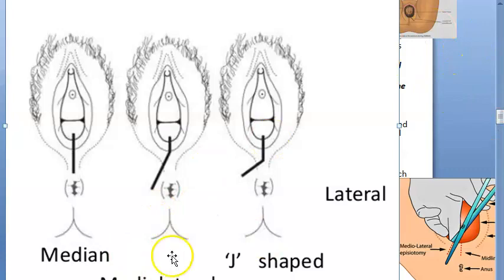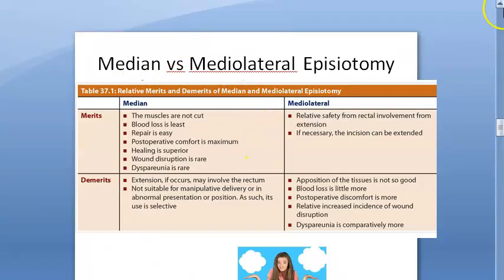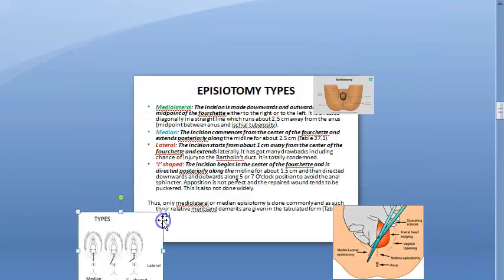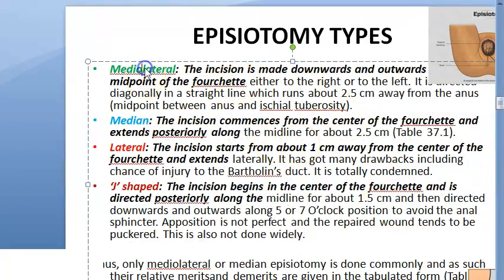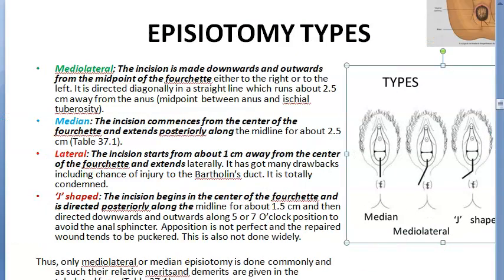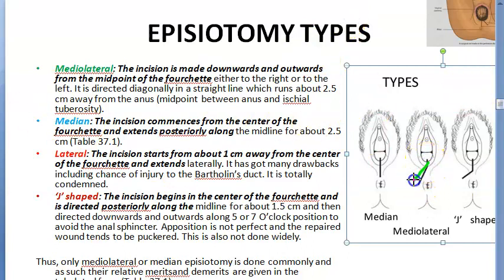You need to remember only two: median versus mediolateral. For mediolateral, you make the incision downward and outward from the midpoint of the fourchette, either to the right or the left. It is directed diagonally in a straight line running about 2.5 cm away from the anus — that's the best part about it. It ends midpoint between the anus and the ischial tuberosity. For median, the incision commences from the centre of the fourchette and extends posteriorly along the midline for about 2.5 cm — but there's a risk of extending and injuring the anus.